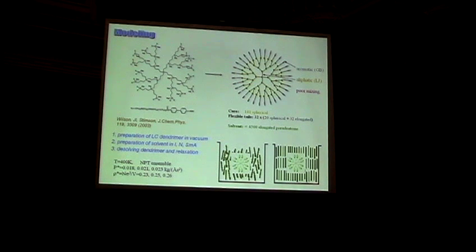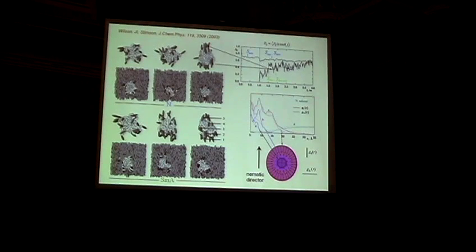So this is our technical method. We found that in the isotropic phase, as would be expected, the dendron is isotropic. And for the nematic and smectic A solvent, we see that the dendron is elongated along the nematic director.